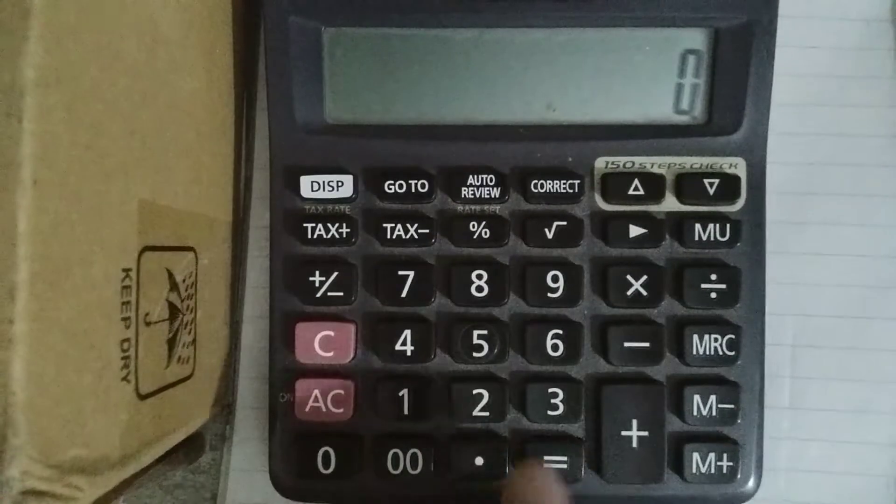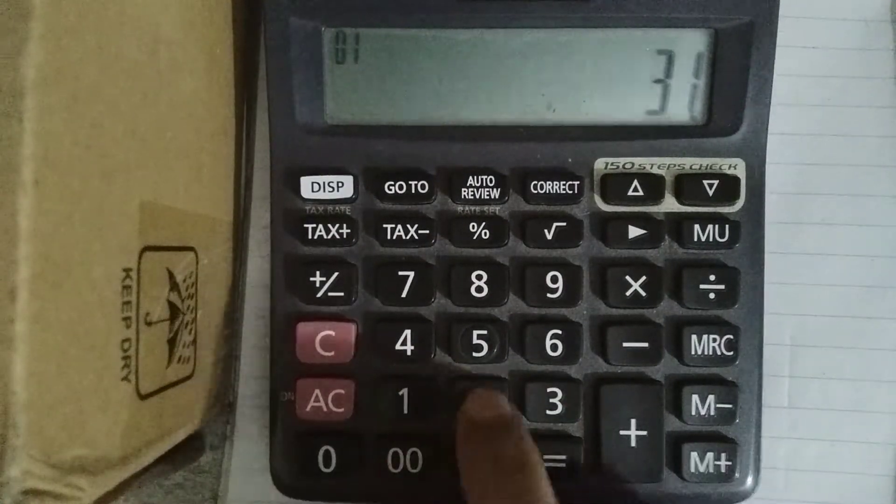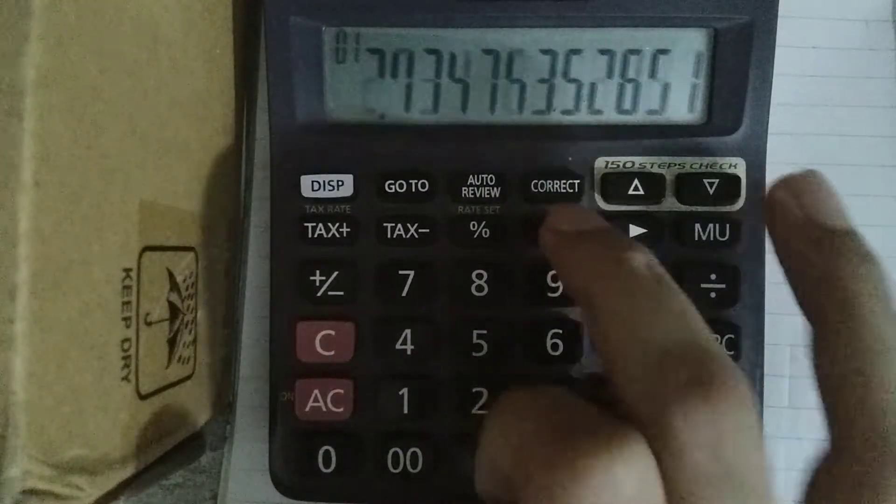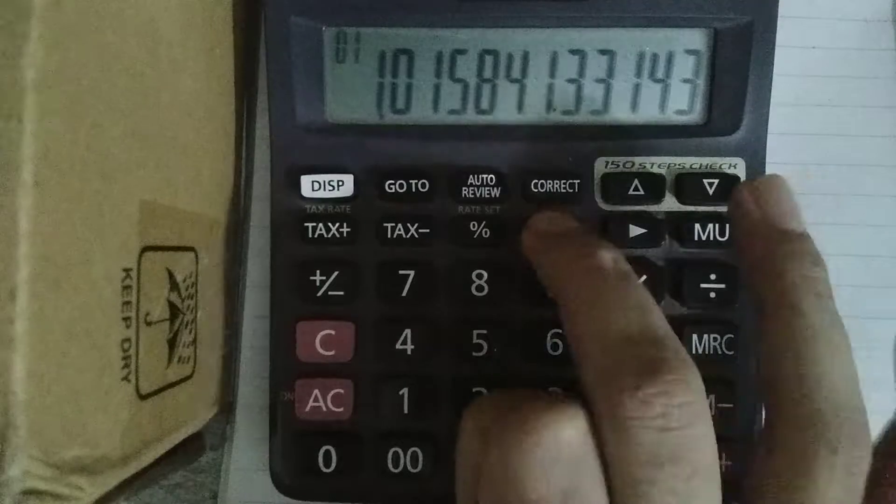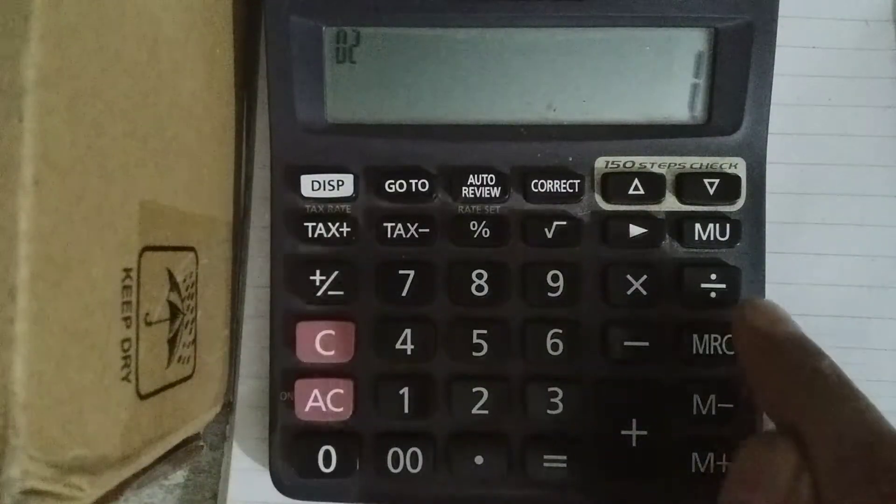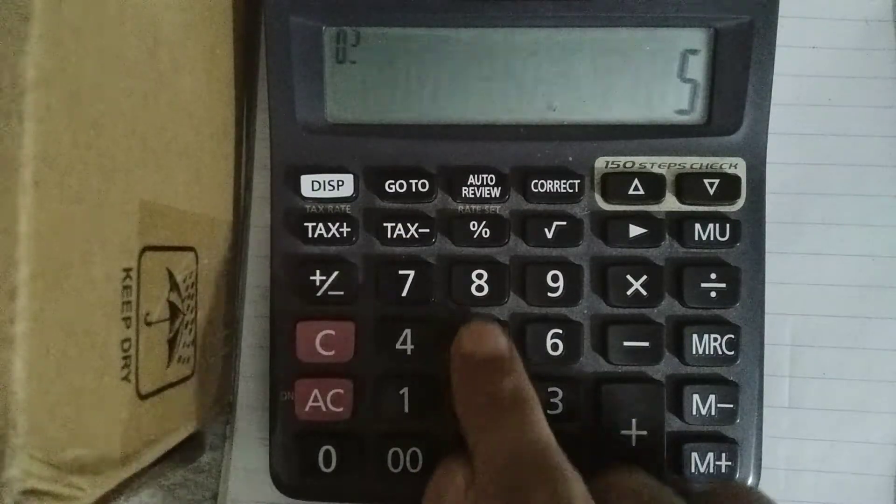At first, you have to type 3125 and then press the root button 12 times: 1, 2, 3, 4, 5, 6, 7, 8, 9, 10, 11, 12. Then minus 1, then you have to divide this by 5.